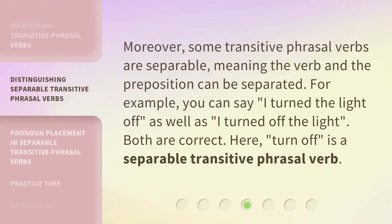Moreover, some transitive phrasal verbs are separable, meaning the verb and the preposition can be separated. For example, you can say "I turned the light off" as well as "I turned off the light." Both are correct. Here, "turn off" is a separable transitive phrasal verb.